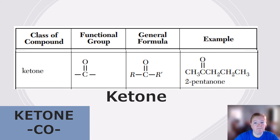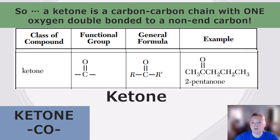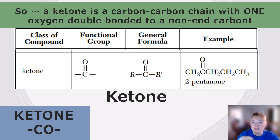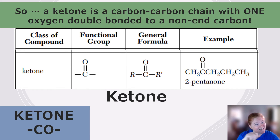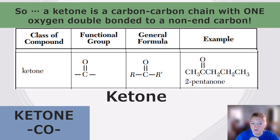A ketone has a C double bond O functional group, but it's somewhere in the chain — not at an end carbon, or it would be an aldehyde. It has to be in the middle. Do you see the number? We need an address because it's in the middle and you have to tell us which carbon has the double-bonded oxygen.